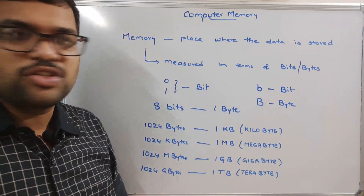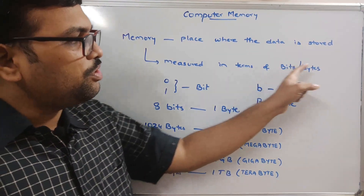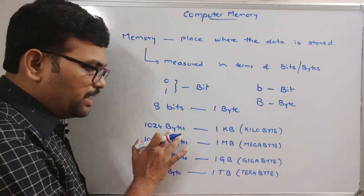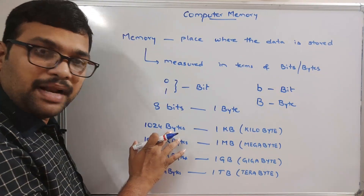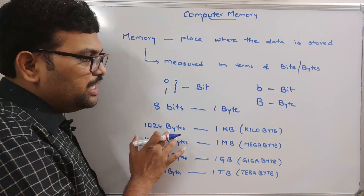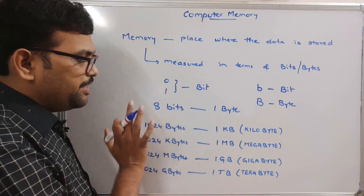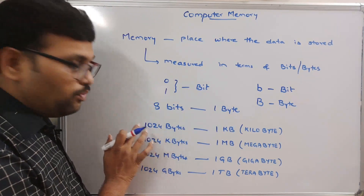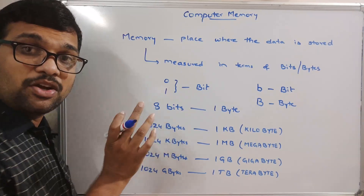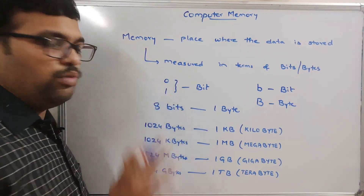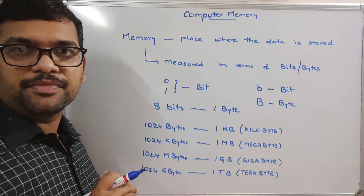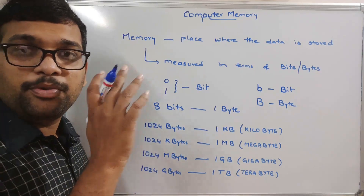For example, if it is 1024 bytes, that implies 1024 into 8 bits — since each byte is 8 bits — so the total is 1024 into 8 bits. That means a combination of zeros and ones, which is nothing but our measurement. This is computer memory measurement.